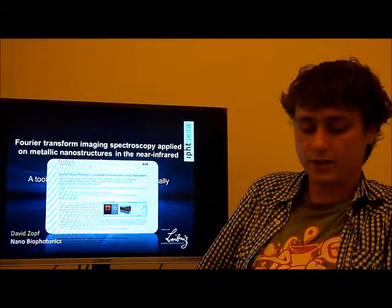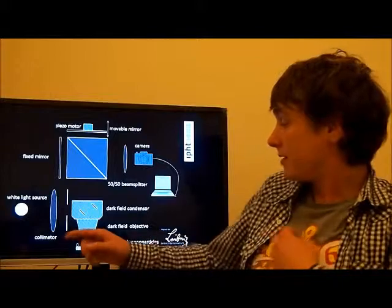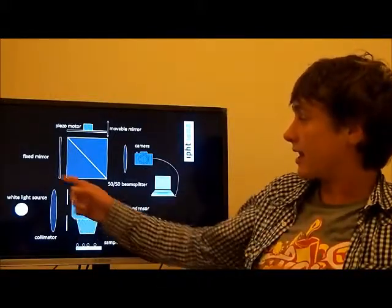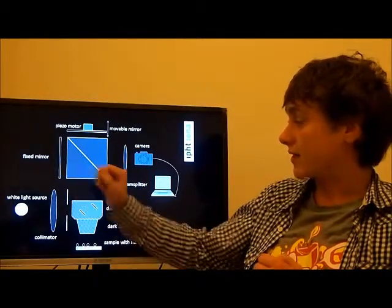The setup of a Fourier transform imaging spectrometer consists mainly of two parts, namely a dark field microscope setup and a Michelson interferometer with a movable mirror and a fixed mirror.